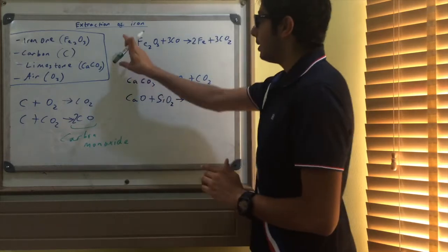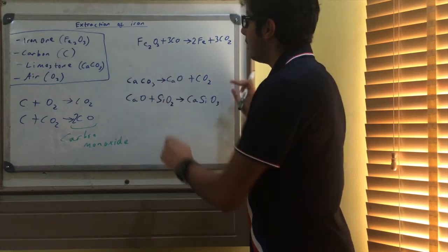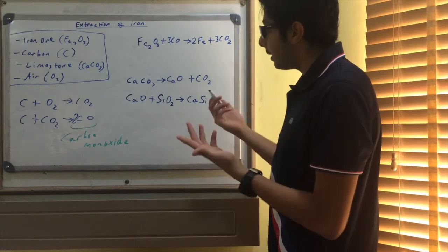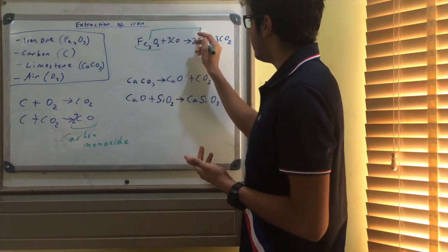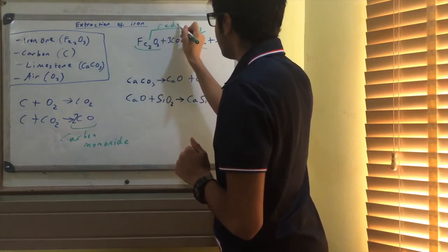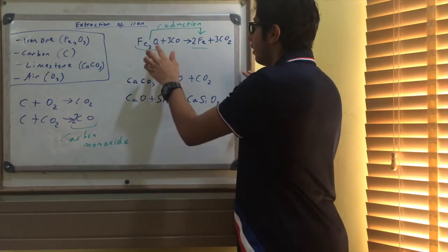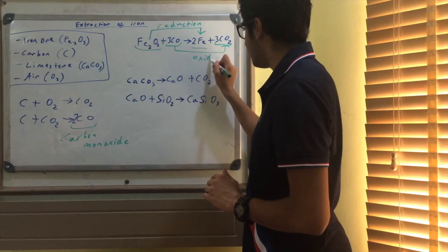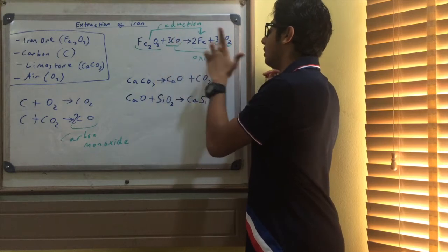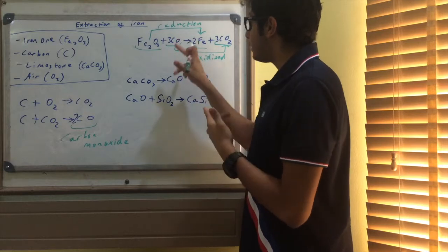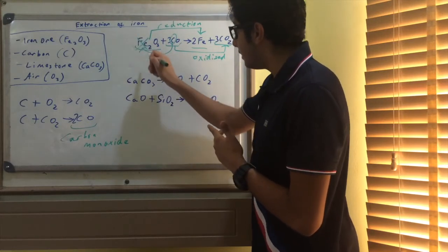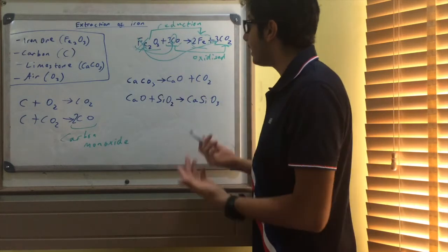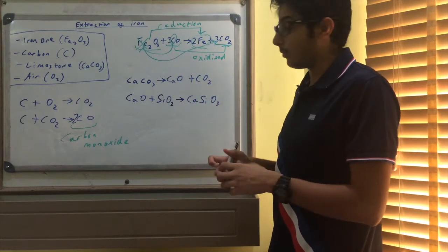The main equation: iron oxide reacts with carbon monoxide to give iron and carbon dioxide. The iron oxide is reduced because oxygen is removed from it. The carbon monoxide is oxidised because it gains oxygen — one oxygen becomes two. The carbon from the carbon monoxide displaces the iron from iron oxide, because carbon is higher in the reactivity series than iron.